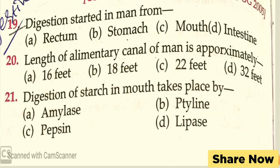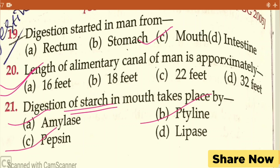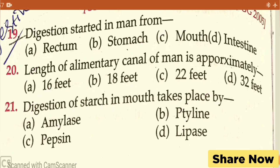Practice question: We know that digestion starts from the mouth. Digestion of starch starts in the mouth — the answer is the mouth. Another question: digestion of starch in the mouth takes place by which enzyme? Options are amylase, thylene, pepsin, or lipase. Comment your answer.